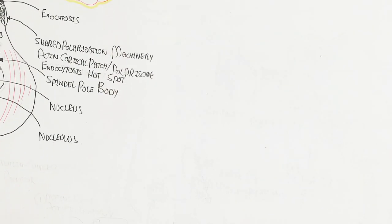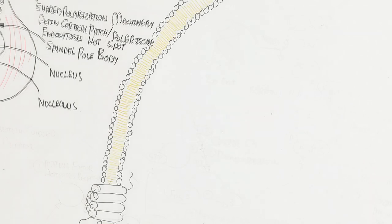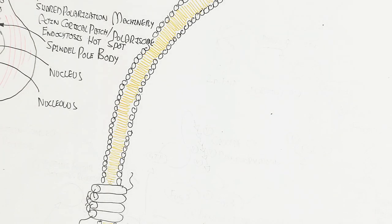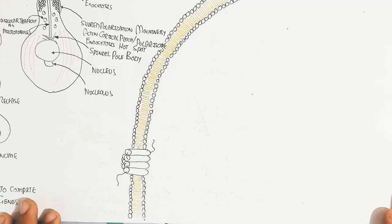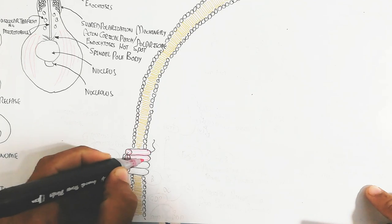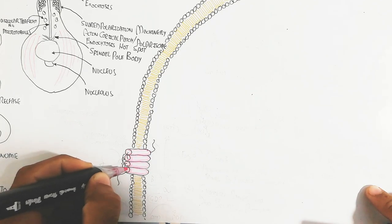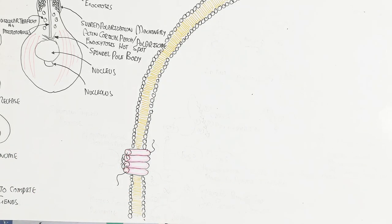The vesicle will traffic for exocytosis, transferring genetic material to another individual. You can consider this as positive and negative mating type individuals.